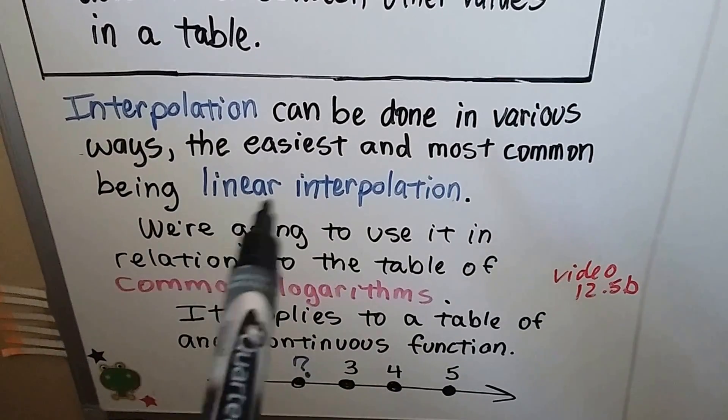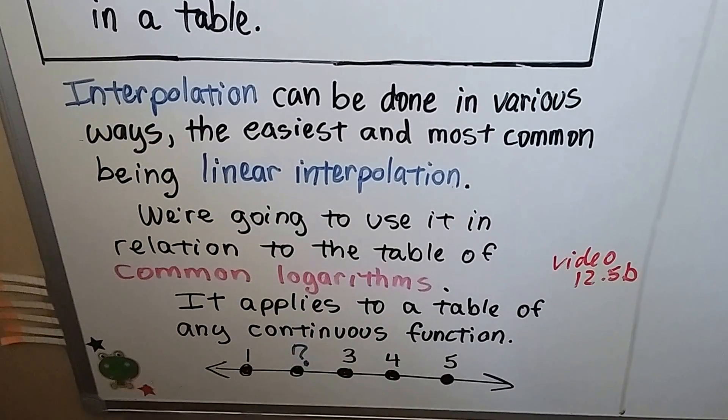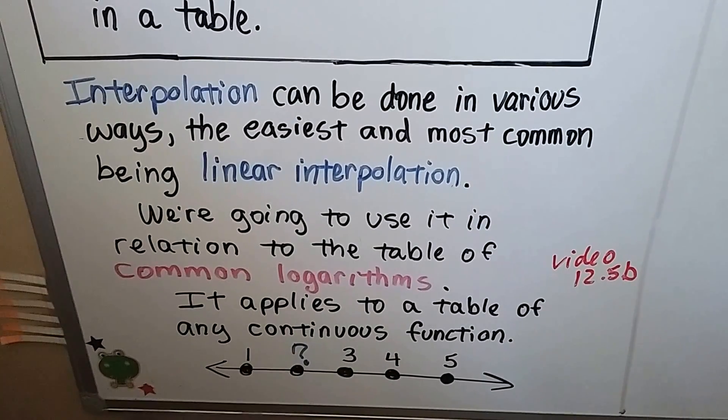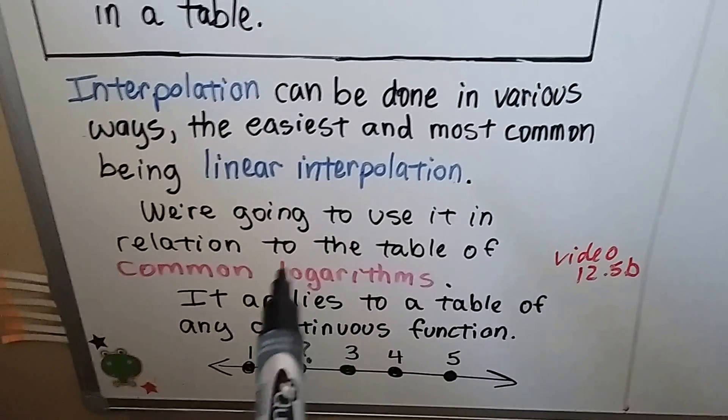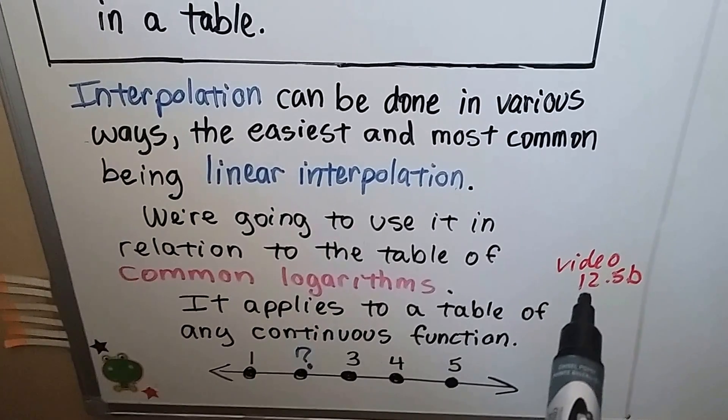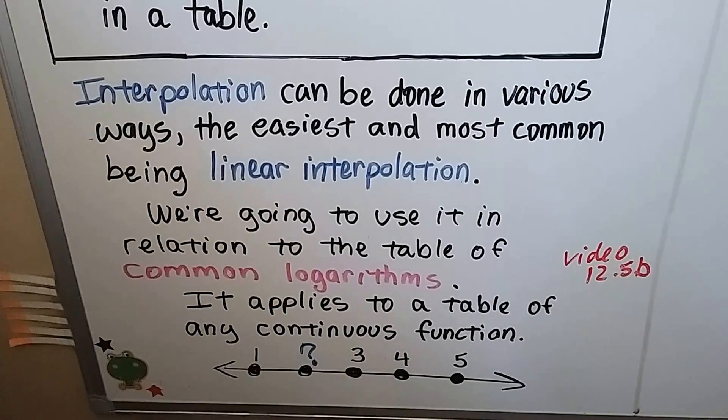It can be done in many ways. The easiest and the most common being linear interpolation. Remember, linear means straight line. We're going to use it in relation to the table of common logarithms that are found online or found in your appendix of your textbook. We talked about common logarithms in video 12.5b and using the table to find them.